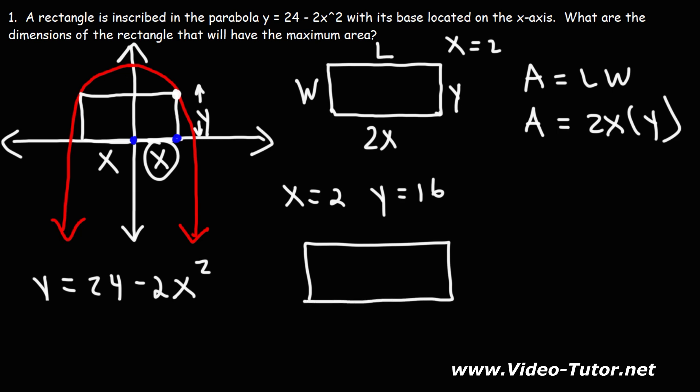The length of the rectangle is 2x. And x is 2, so 2 times 2 is 4. So L is 4. The width is the same as y. So the width is going to be 16. So those are the dimensions of the rectangle that will give us the maximum area. It's 4 by 16. So that's the answer that we're looking for.